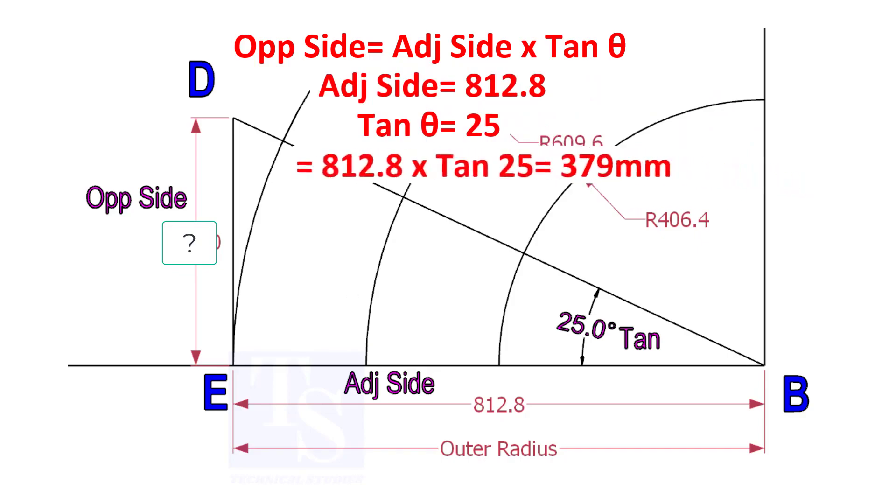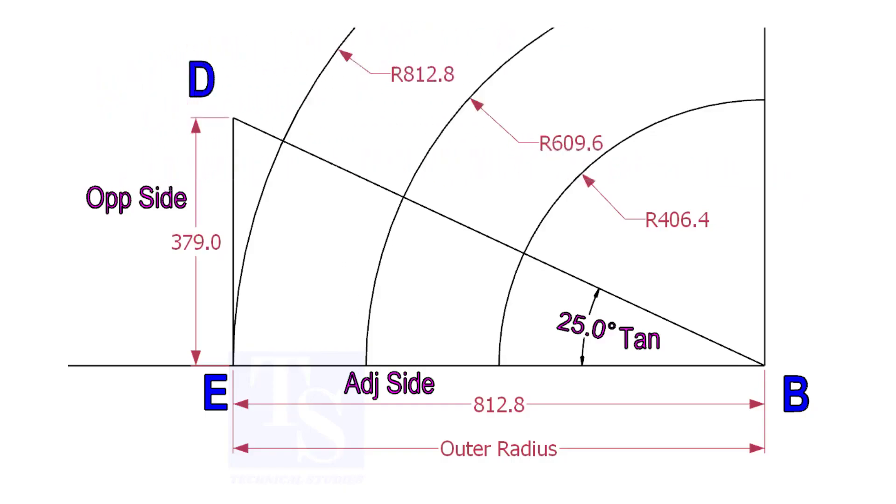812.8 into tan 25 equals 379 millimeters. Draw the line ED vertically and the slant line DB.